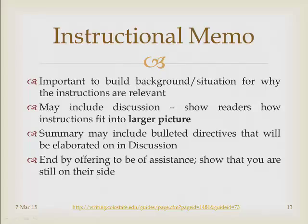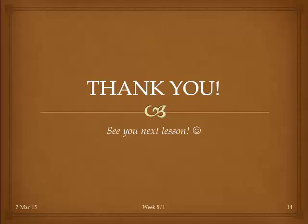Show readers how the instructions will benefit them and the company in the bigger picture. Your summary section, which comes before the discussion, can include bulleted directives — complete sentences listing what you want employees to do — which are then elaborated on in the discussion section. Give the point forms first so readers can see them clearly, then discuss the importance in the discussion section. End by offering to be of assistance, showing that although you're asking them to do all these things, you're still on their side and they have your support. We'll discuss further and do more practice in class. Thank you.